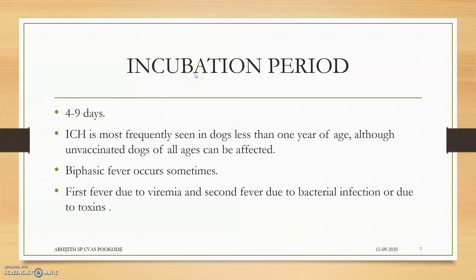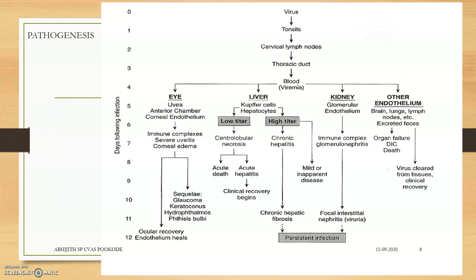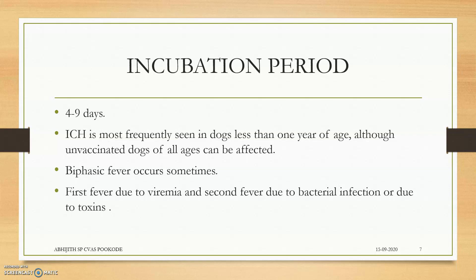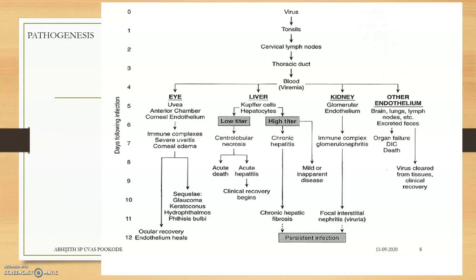The incubation period is four to nine days. Biphasic fever occurs sometimes, and the second fever is mainly due to lodgement of virus in the system and also due to secondary bacterial infection. In the pathogenesis, the virus comes into contact with the animal's body through the nasal or ingestive route and replicates in the tonsils and cervical lymph nodes in the upper respiratory tract and the buccal mucosa.